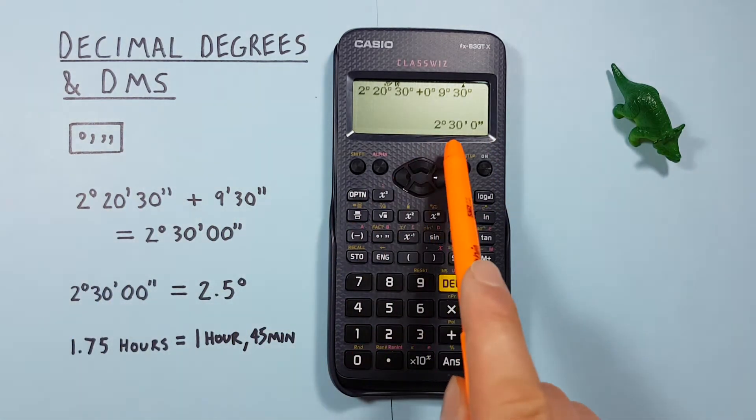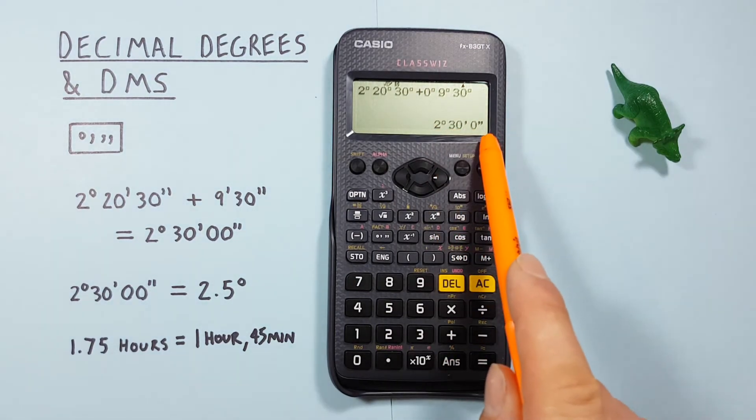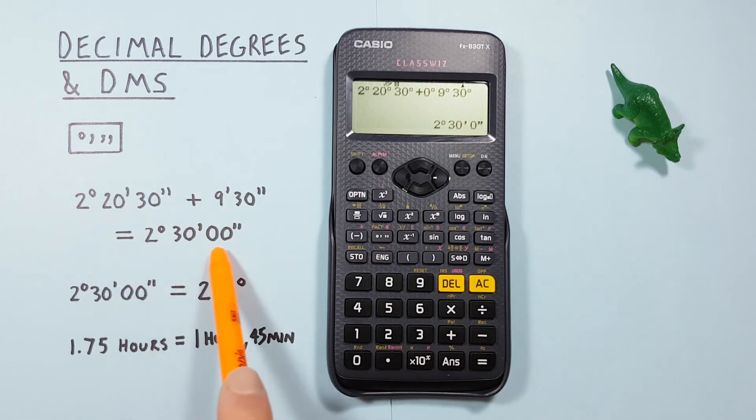And we see we get our result which is 2 degrees 30 minutes 0 seconds with the correct symbols in the answer line there, which makes sense.